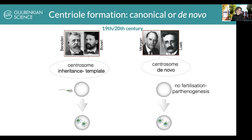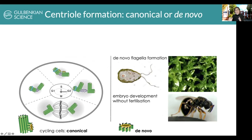These were two opposing views: whether the centrosome is a continuous structure transmitted from generation to generation, or whether they form de novo. We now know this might not be exclusive. In cycling cells, you start the cell cycle with one cell with two centrioles, and they duplicate close to the one that already exists — almost like a template — where new centrioles form and elongate, so at mitosis you have two centrosomes each with two centrioles. This is the canonical pathway.